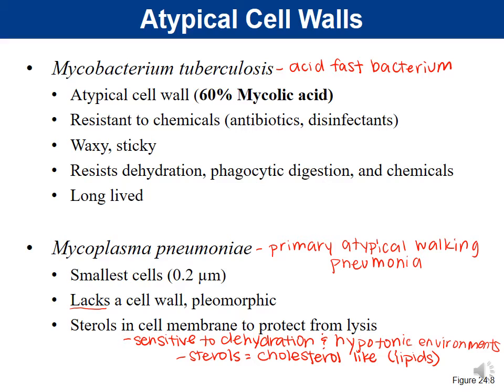One problem with treating Mycoplasma is that they're difficult to treat with antibiotics because they lack a cell wall. Penicillin targets peptidoglycan synthesis or cell wall synthesis. If Mycoplasma lacks a cell wall, they don't have peptidoglycan, meaning penicillin would not be effective. So these bacteria are more difficult to treat because we don't have as many antibiotics that can target them.